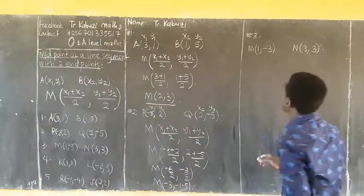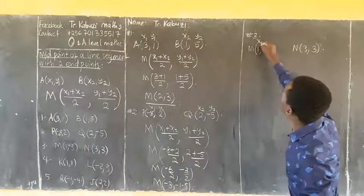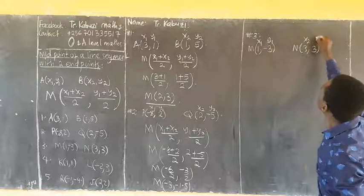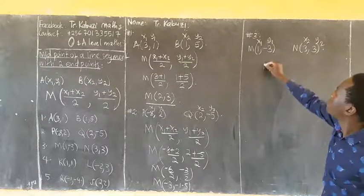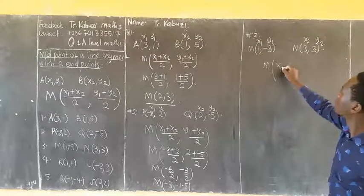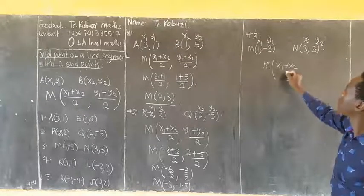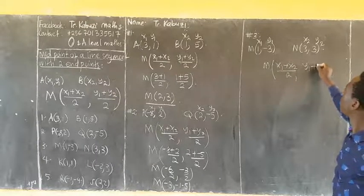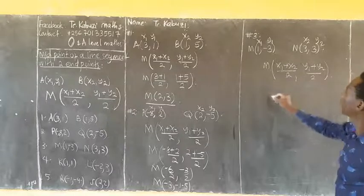When I come to this, I say this one is my X1, Y1, X2, Y2. So now my midpoint M will be X1 plus X2 over 2, comma, Y1 plus Y2 over 2.